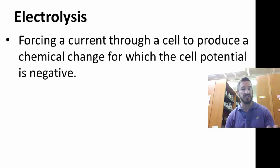Remember we said this is what electrolysis is. We're putting a current to produce a chemical change, and we've got a negative cell potential. We also have a positive delta G.